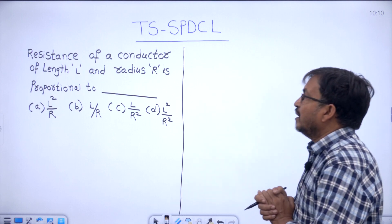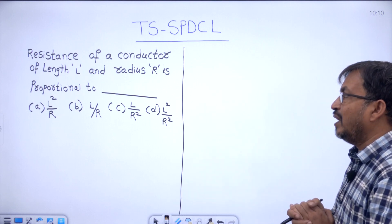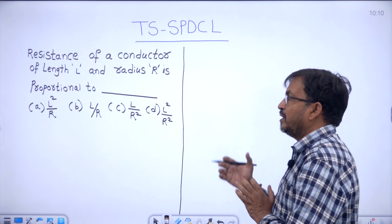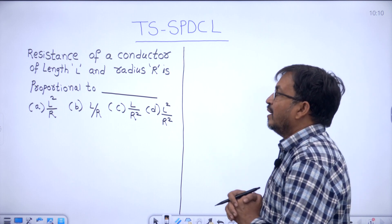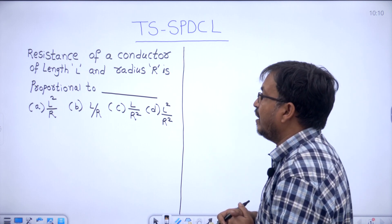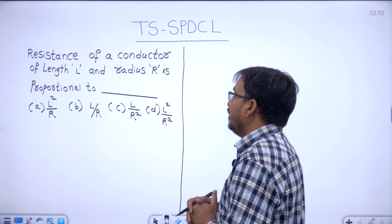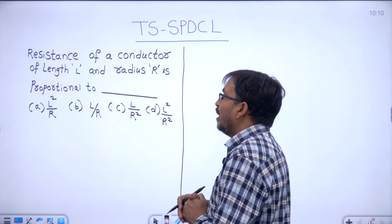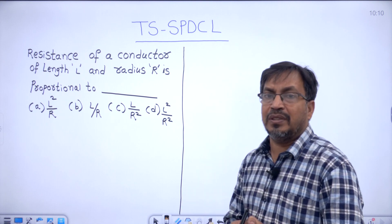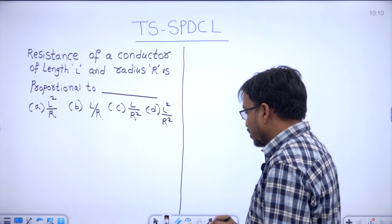The question is from the TSHPDCL July question paper. Resistance of a conductor of length L and radius R is proportional to. This is the question.